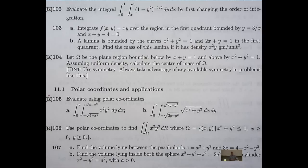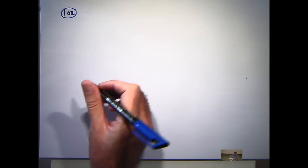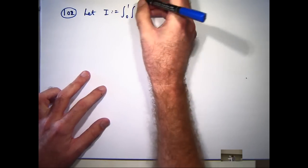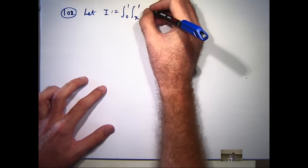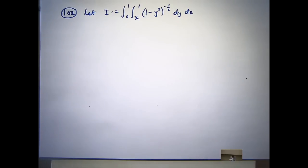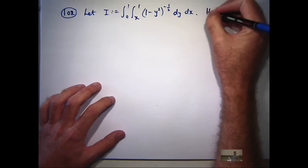We've got another integral and we want to first change the order of integration — that's what we're asked to do. So I'm going to let I denote our integral, the value of our integral. The question asks us to first change the order of integration. So our region of integration, let's call it omega.